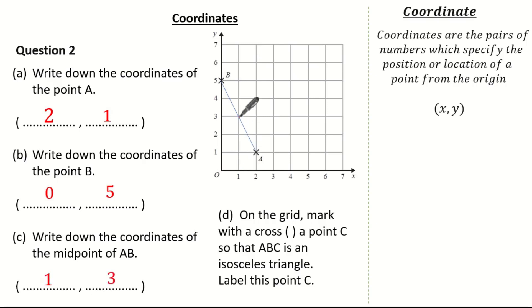Now we're asked to mark with a cross at point c so that abc is an isosceles triangle. Well there are many different answers to this so let's see how you got on. Firstly let's use ab as one of our equal lengths so therefore drawing another equal length you can see we've got an isosceles triangle therefore we could say point c is 4, 5.